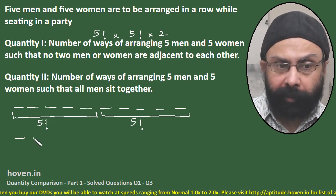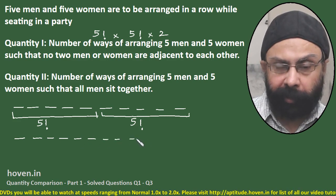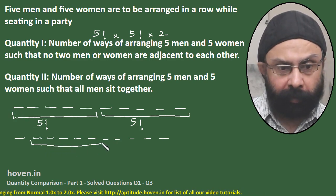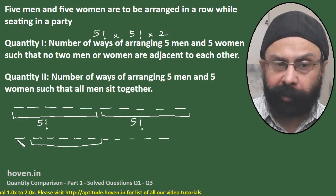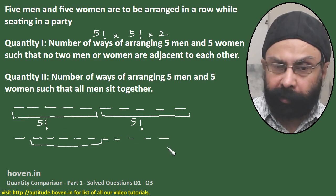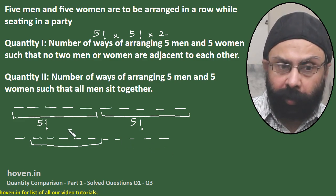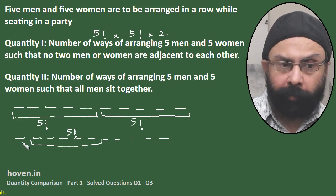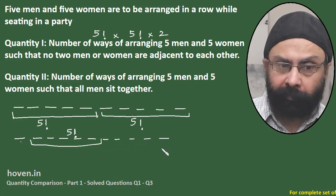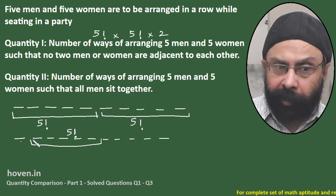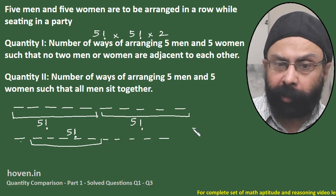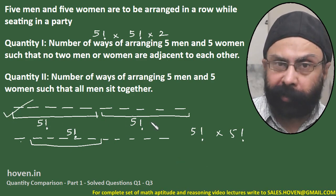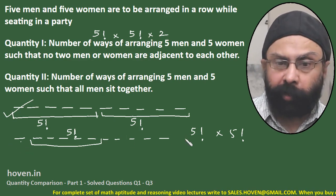Another possibility is that men start from a different position — for example, one woman sits on one side, then 5 men together, and the remaining 4 women on the other side. In each such arrangement, men have 5! possibilities and women have 5! possibilities, giving 5! × 5! per block position.